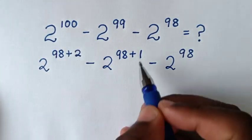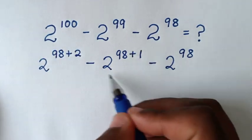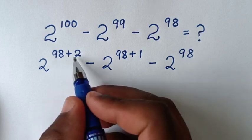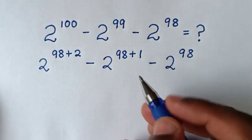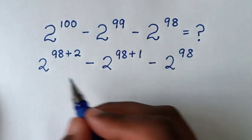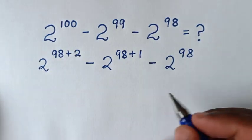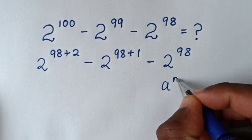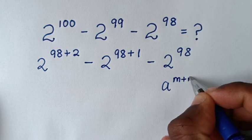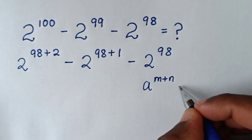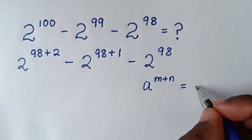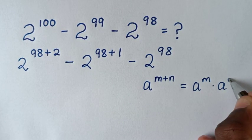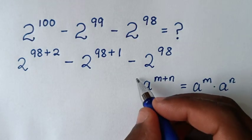These terms are in the form of addition of powers. This is in the form of a power of m plus n, which is equal to a power of m times a power of n. We will apply this rule here.